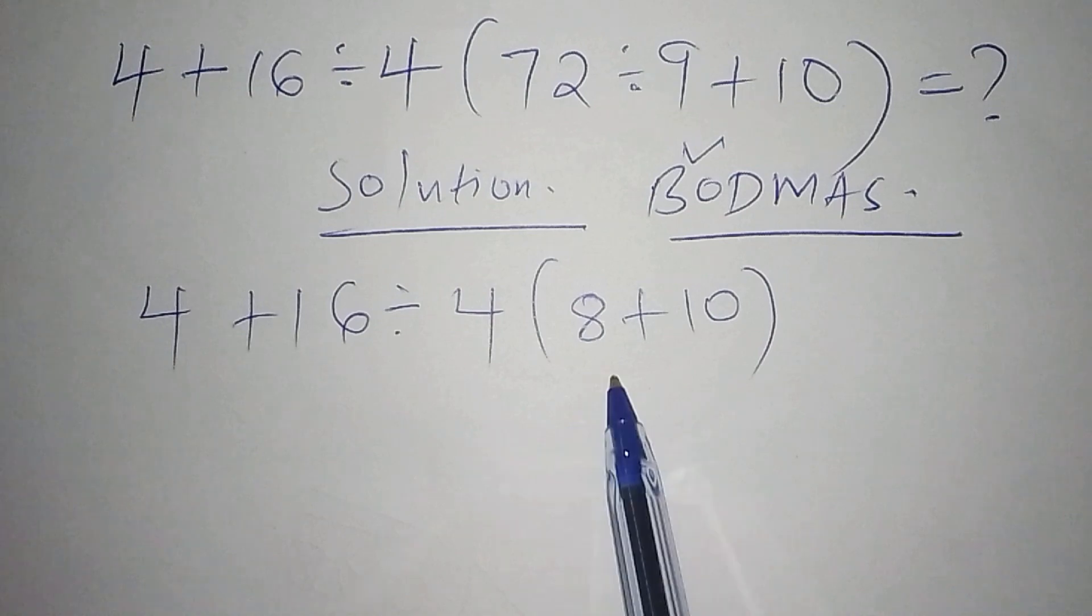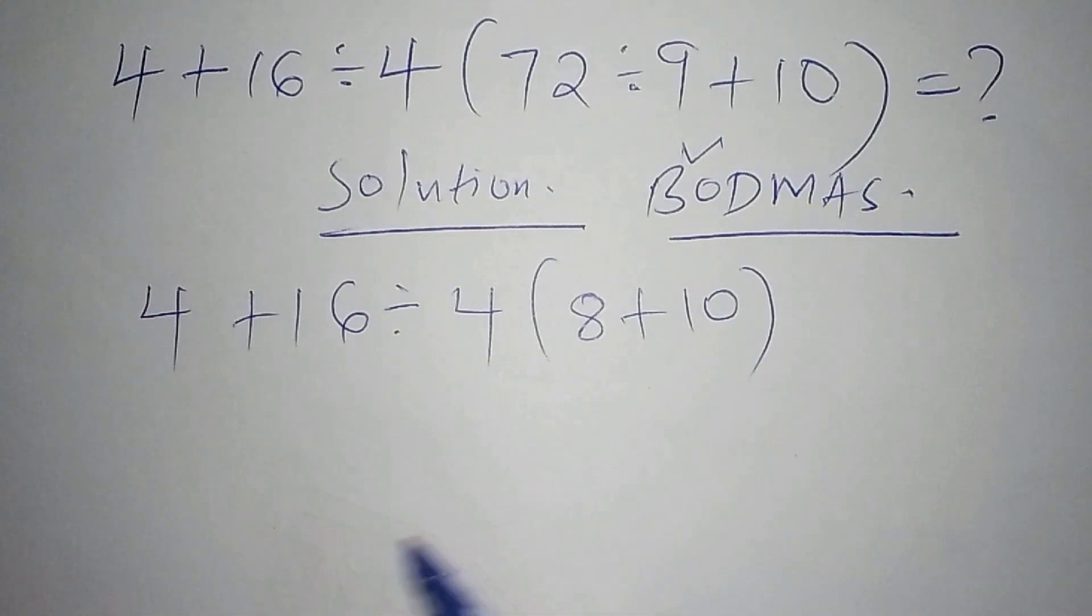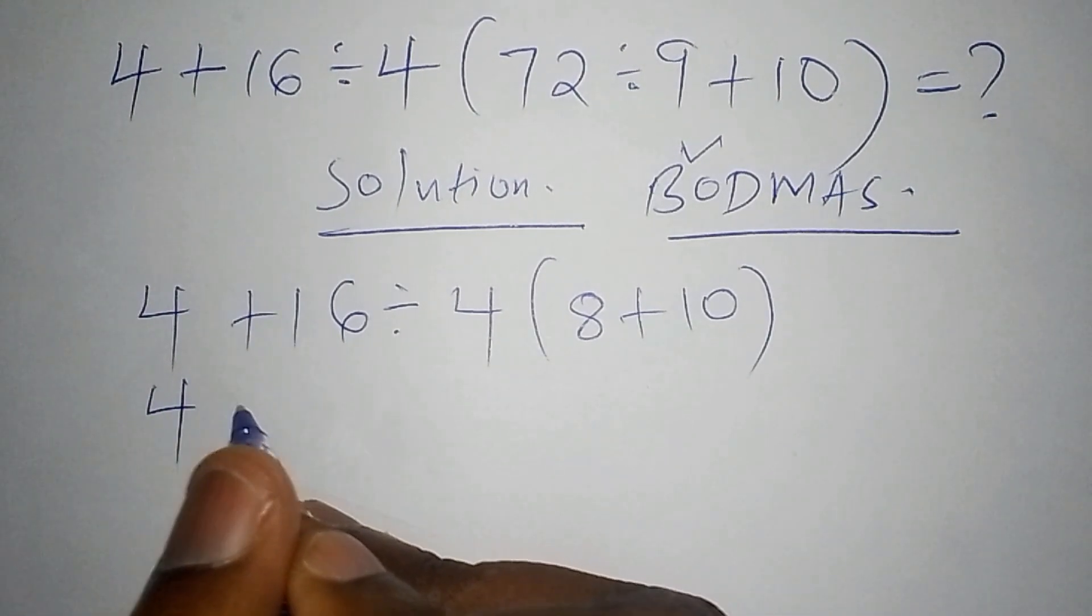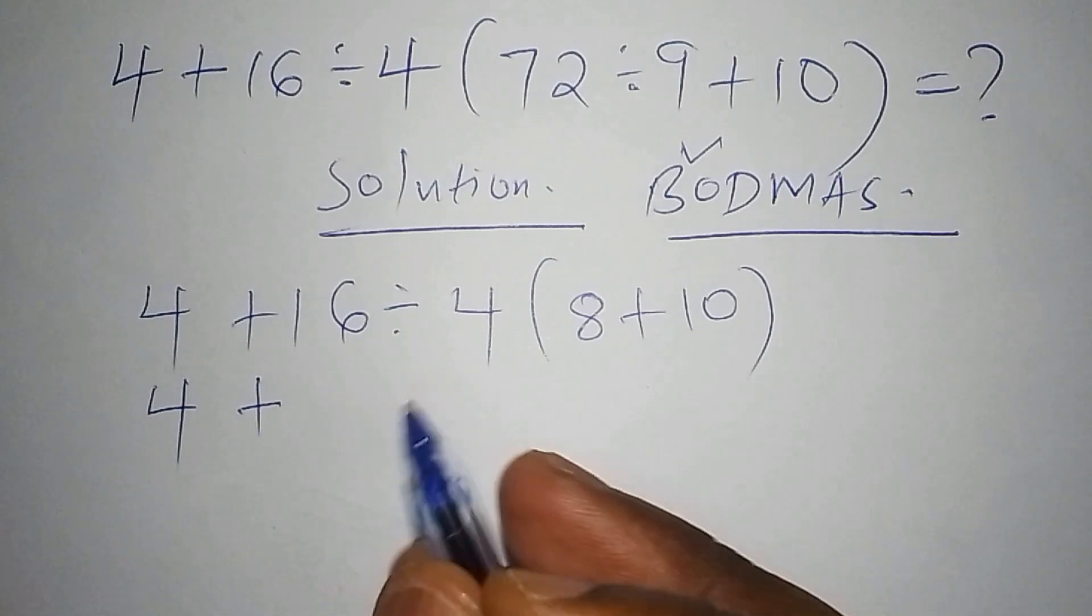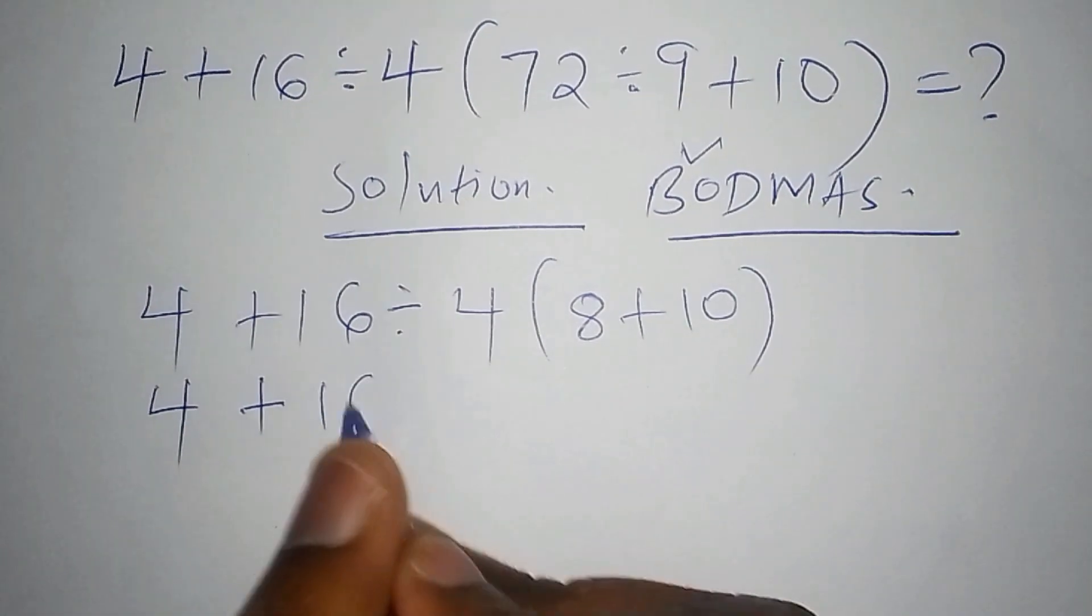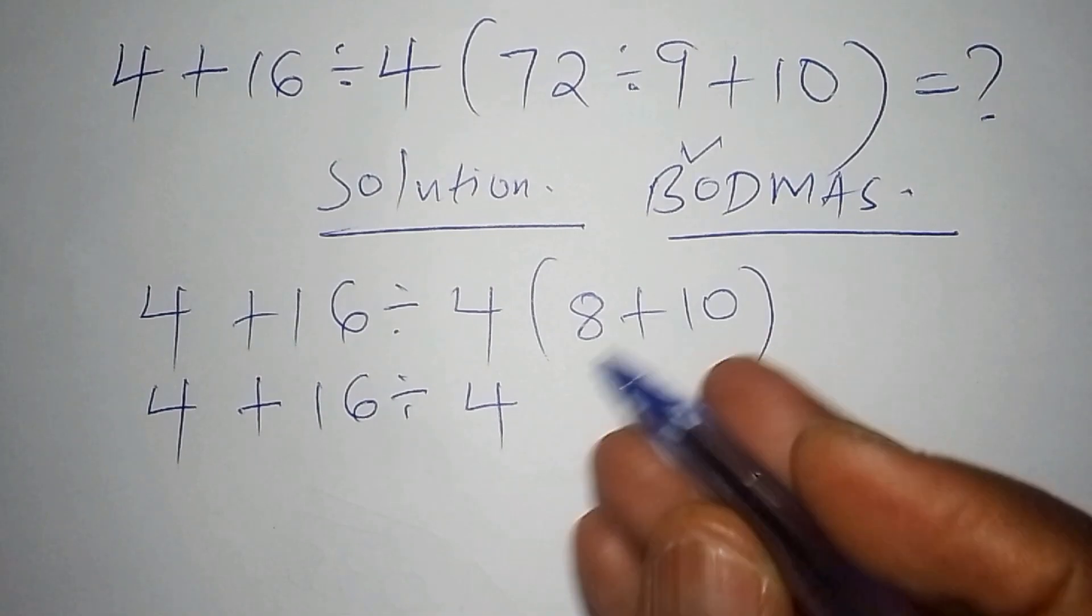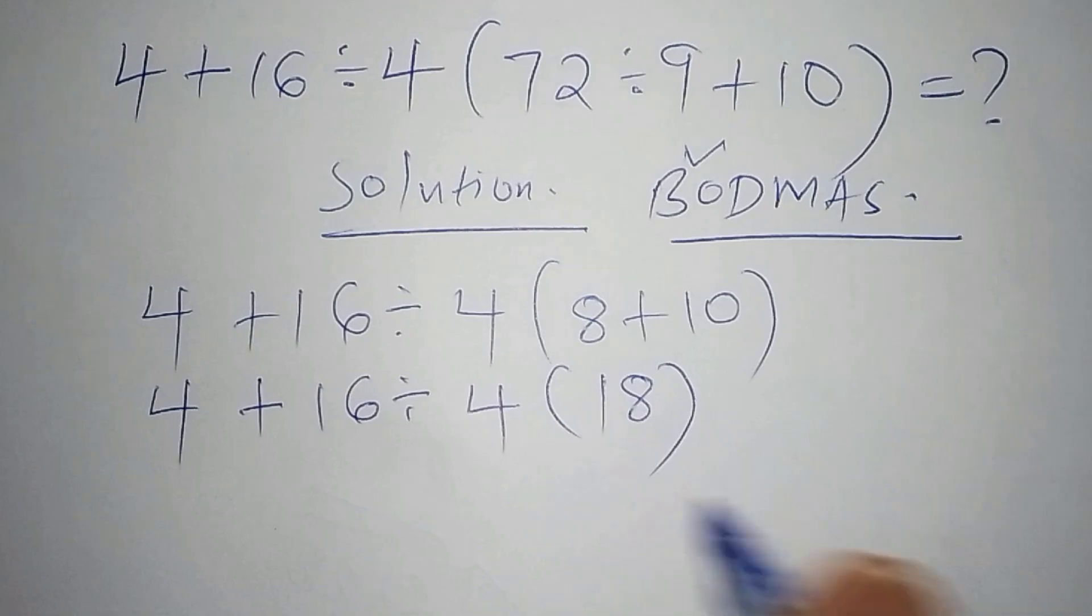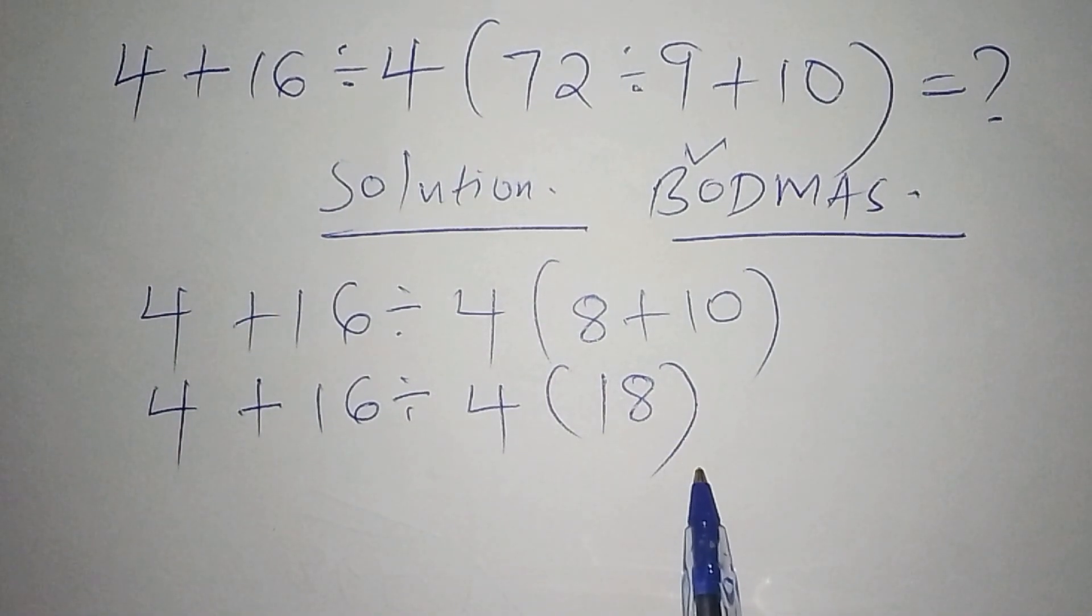We're supposed to proceed. The next step: we shall have 4 + 16 ÷ 4 (don't work out the division first), then we have (8 + 10), so there we shall have 18. Into bracket 18. We are still not yet done with the bracket.